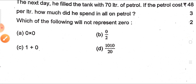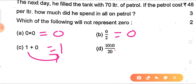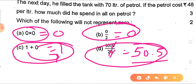Next: which of the following will NOT represent zero? Zero × 0 = 0, and 0 ÷ 2 = 0, so those represent zero. But 1 + 0 = 1, not zero — children often write zero here, but it's wrong. Also, 100 ÷ 20 = 5, not zero. So the first two options give zero, and the third and fourth options do not give zero.